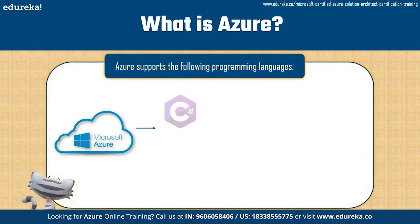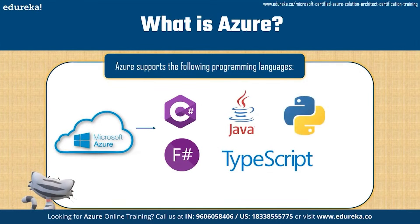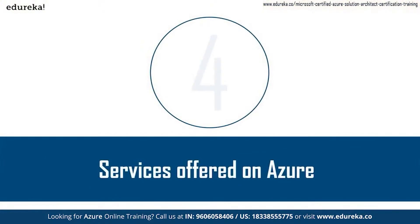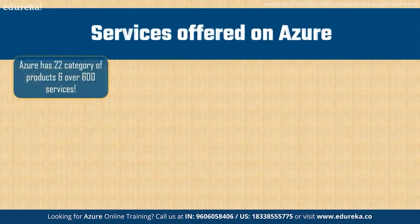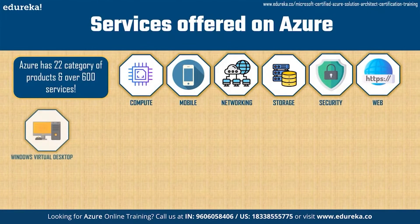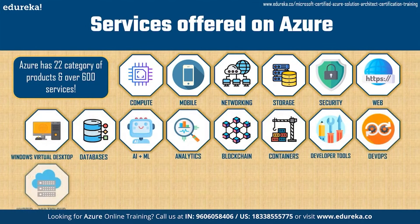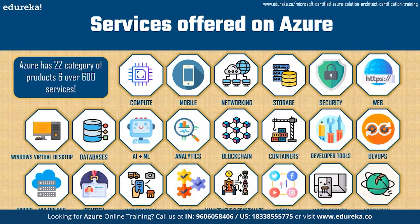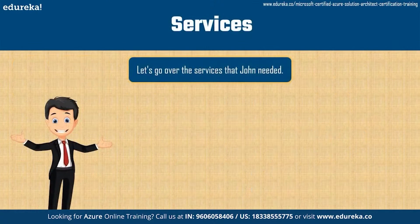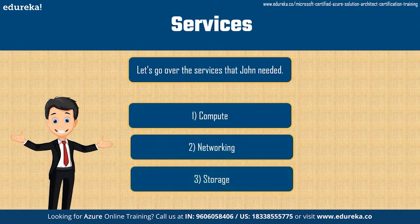The languages supported on Microsoft Azure are C#, F#, Java, TypeScript, and Python. Now, Azure has 22 categories of products and over 600 services, so we won't be able to cover all of them here — go to Azure's website and check out each category. If you have any questions, comment down below and we'll be happy to answer. John needed three services: compute, networking, and storage. Let's take a look at each one in a little detail.